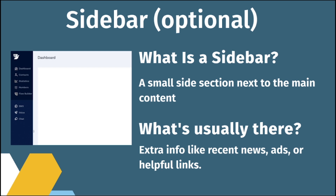Then we have a sidebar. It doesn't always have to be there, but sometimes it's necessary. It is a small section right beside the main page, next to the main content. What is usually there? Extra information — like news, ads, or some other helpful links.